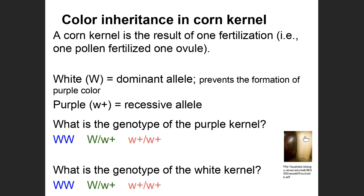But in this case, we know that the white is dominant over purple. So you guys are right that the purple would be the recessive-recessive, and then the white is either homozygous dominant or heterozygous.